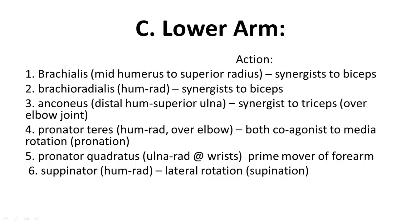A couple of the lower arm muscles with smaller names: the brachialis and brachioradialis, both of which are synergists to the biceps. You also have some synergists to the triceps — the anconeus — and then the pronator teres, pronator quadratus, and supinator, which are important for lateral rotation of the hand: moving it palm up or palm down.